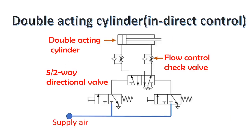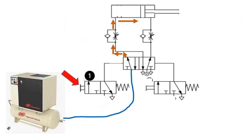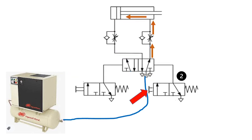This is a double-acting cylinder with control. The double-acting cylinder is to advance when push button number one is pressed, and it will remain extended until push button number two is pressed. When push button number two is pressed, the cylinder is to retract.